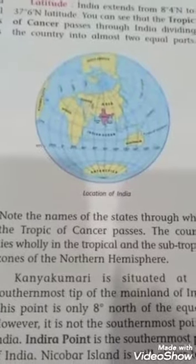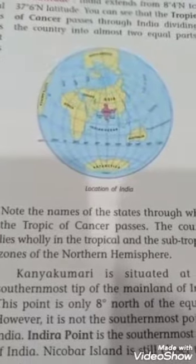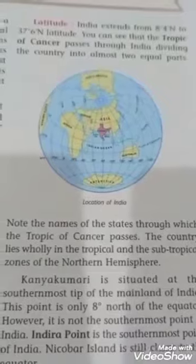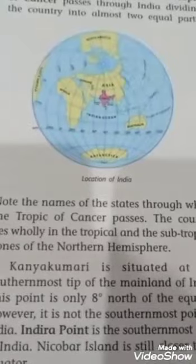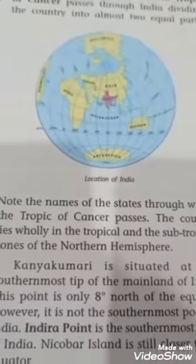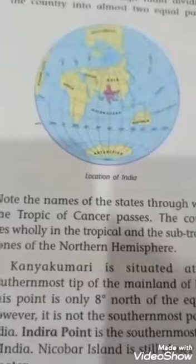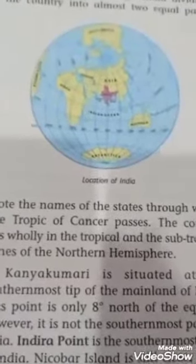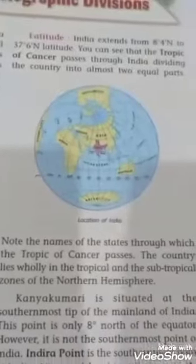The latitude and longitude coordinates — 68 degrees 7 east and 90 degrees 25 minutes east longitude — should be underlined with a pencil. The north-south extent of the Indian mainland is about 3200 kilometers and the east-west extent is approximately 2900 kilometers.